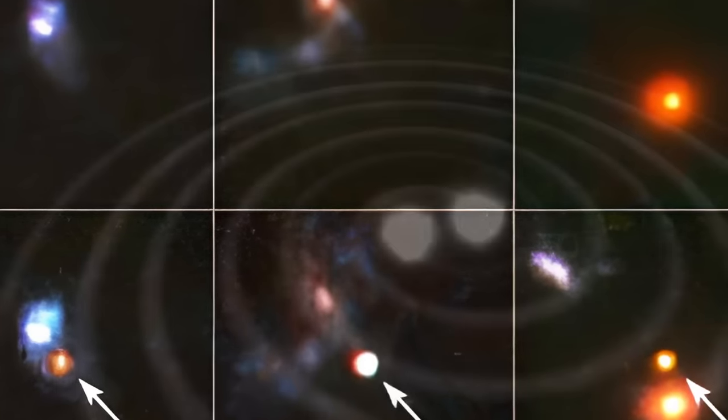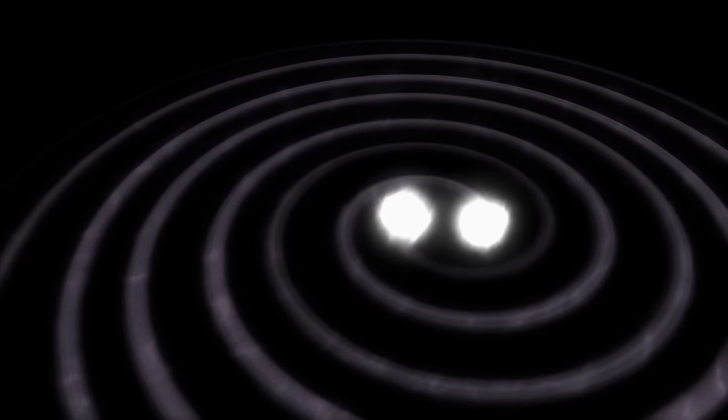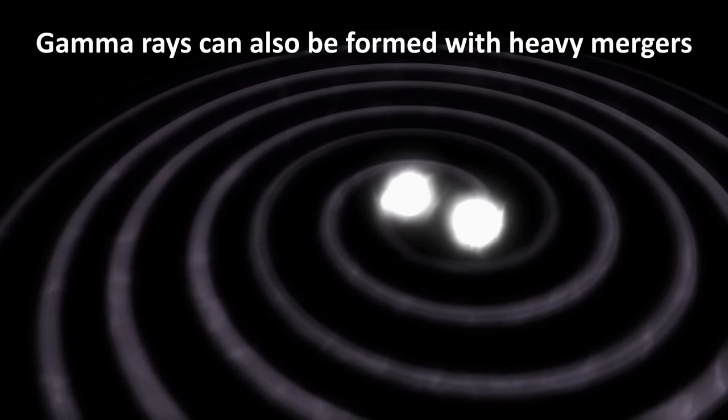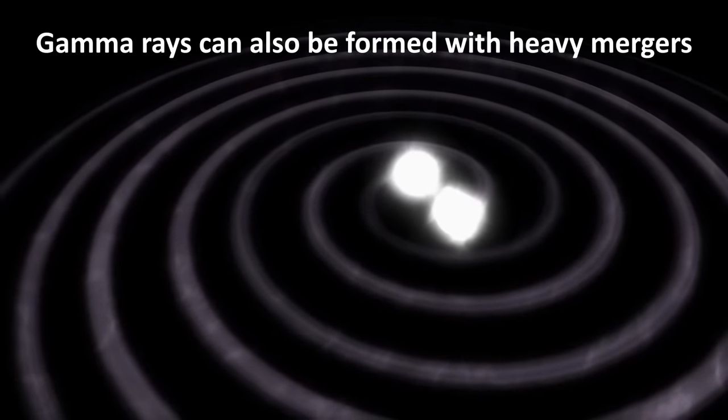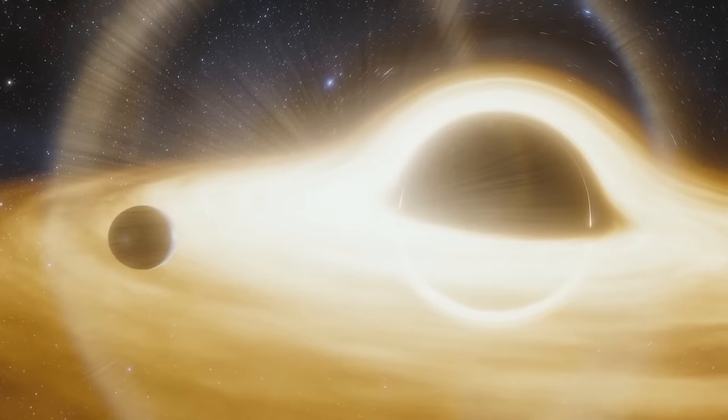I should mention that besides supernovae, gamma rays can also be formed by very heavy mergers, such as when two neutron stars merge, or when a neutron star merges with a black hole.